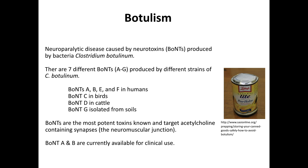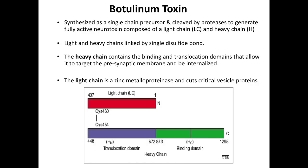Types A and B are also clinically used, which will be described later on in the lecture. Botulinum toxin is synthesized as a single chain precursor and cleaved by proteases to generate fully active neurotoxin composed of a light chain and a heavy chain, linked together by a single disulfide bond. The heavy chain contains the binding and translocation domains that allow it to target the presynaptic membrane and be internalized into the cell. The light chain is a zinc metalloproteinase that cuts critical vesicle proteins.